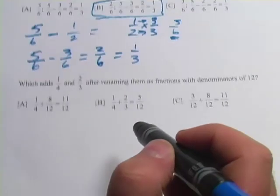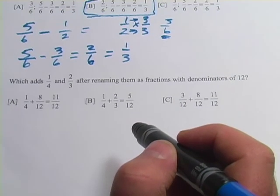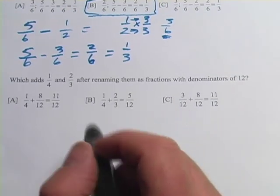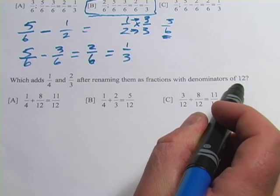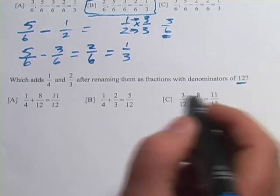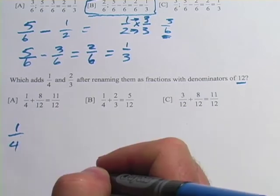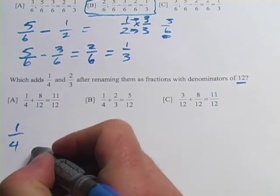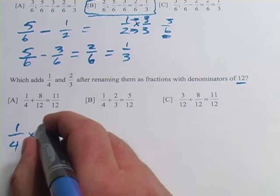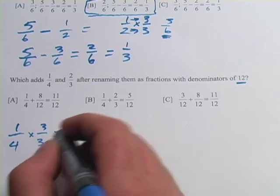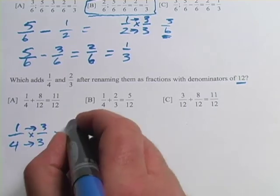All right, one more. This one says, which adds 1/4 and 2/3 after renaming them as fractions with denominators of 12? So we're going for a denominator of 12. Neither of these are 12 to start with. We're going to have to change both of them. So 1/4, how do you get 12? You multiply by 3. So we'll multiply by 3 over 3. That's going to equal 3/12.